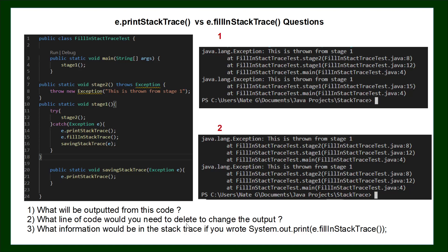What line of code would you need to delete to change the output from one version to the other? And what information would be in the stack trace if you just wrote out System.out.print with e.fillInStackTrace() — if you got rid of all the others and just printed that out, what would be displayed? Stop the video now and see if you can answer these three questions.